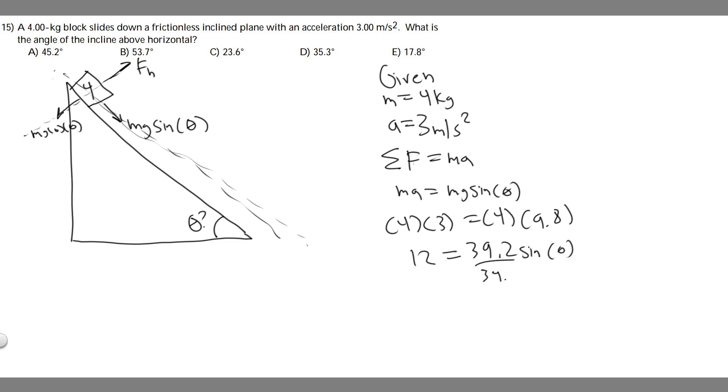Divide by 39.2. Then we have sine of theta equals 12 over 39.2. So you're going to take the arc sine of both sides. Arc sine of 12 over 39.2.